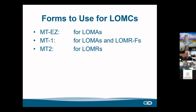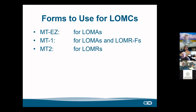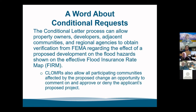What forms are used to apply for letters of map change? If it's just a LOMA on natural grade, you can use an MTEZ or an MT1 — you can print those off and mail them in, or submit them online digitally. Anyone can fill out an MTEZ or MT1: a floodplain administrator, a contractor, or the property owner. If it's a LOMR-F, it has to be the MT1. If it's a LOMR, it has to be an MT2. We'll be going into more detail, and I'll talk about which forms to fill out again at the end of this presentation.